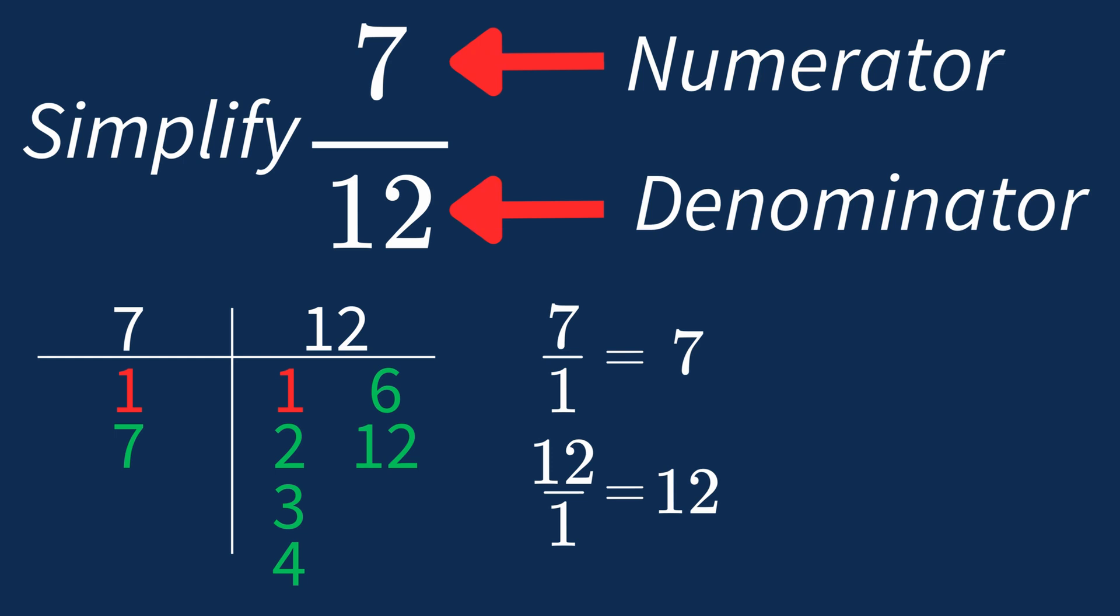So after dividing both the numerator and denominator by their greatest common factor of 1, we still end up with the same fraction, 7 over 12.